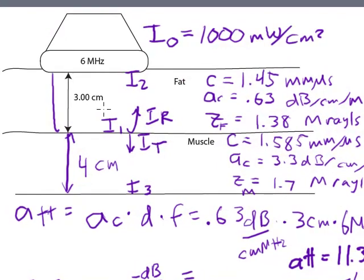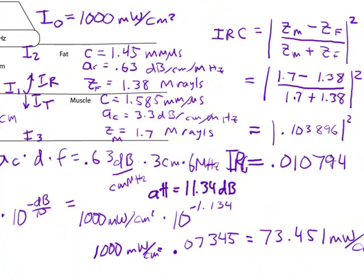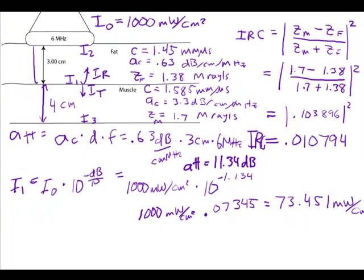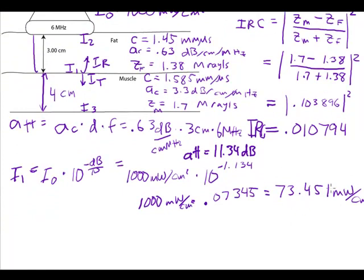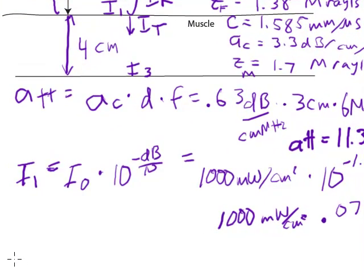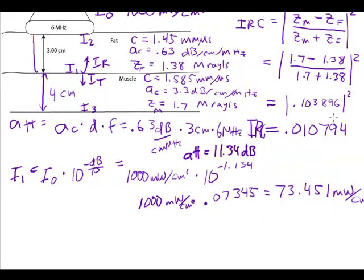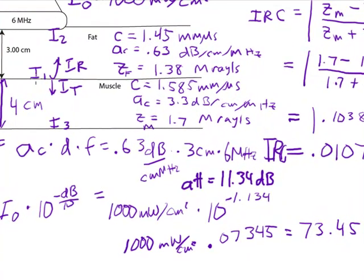Now let's look at the reflection. And I said the reflection coefficient came out to be 0.010794. And so that's a portion of this wave. It's already been diminished quite a bit down to 73 milliwatts. Now it's going to be diminished some more when it's reflected. So only a small fraction of that wave.